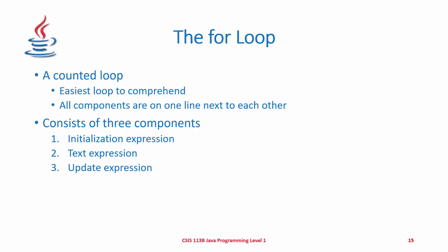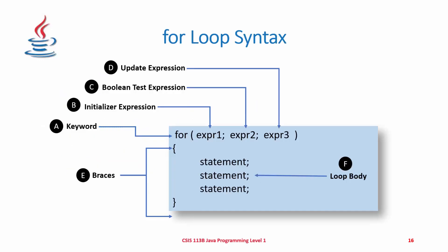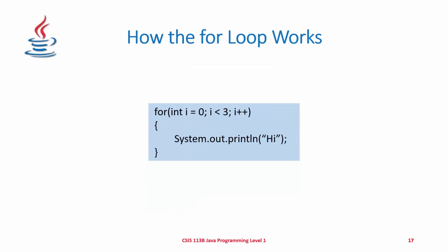Next we look at the for loop — a counted loop and probably the easiest loop to comprehend. All components are on a single line and it consists of three parts: the initialization expression, the test expression, and the update expression. The syntax uses the keyword 'for,' followed by parentheses containing the initializer (with a semicolon), then the boolean test expression (with a semicolon), then the update expression. A curly brace follows to contain the statement block that executes as long as the boolean test evaluates to true. In the example, integer i is assigned zero as the initializer, checked if less than three as the boolean test, and incremented as the update.